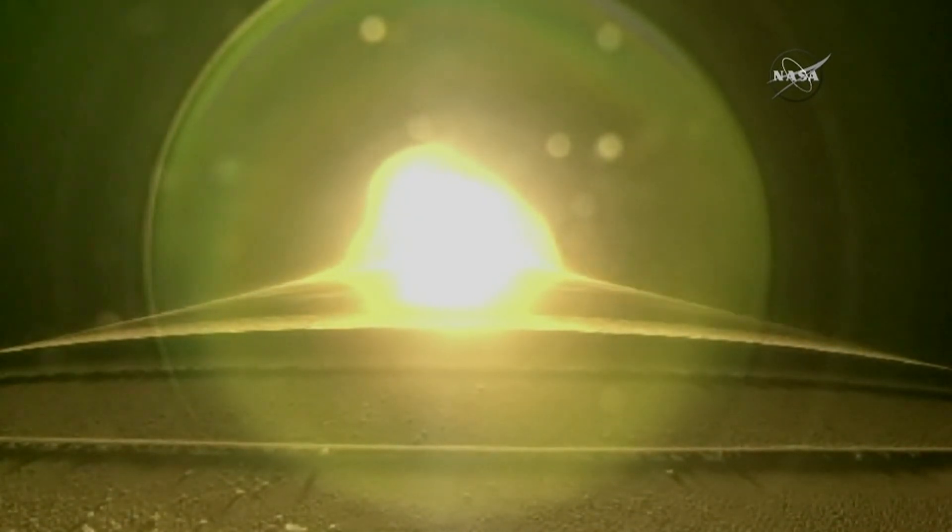Coming up on the throttle down. The booster has throttled back, right on schedule. Signatures look good. Pump speeds, injector pressures continue to look right within band. Body rates controlling down the middle. Current altitude is 13 miles, downrange distance 7 miles.